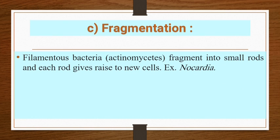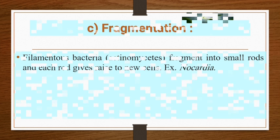The third method is fragmentation. Filamentous bacteria fragment into small rods, and each rod gives rise to new cells. An example is Nocardia. Generally, most Actinomycetes are reproduced by fragmentation.